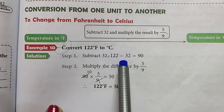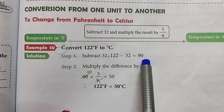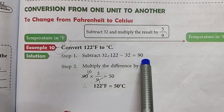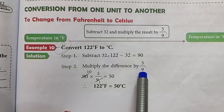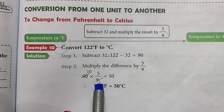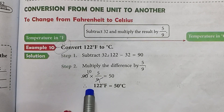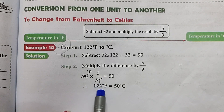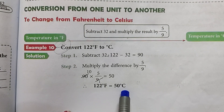122 minus 32 gives us 90. Now Step 2: multiply the difference by 5/9. 90 multiplied by 5/9 gives us 50. Therefore, 122 Fahrenheit is equal to 50 degrees Celsius.